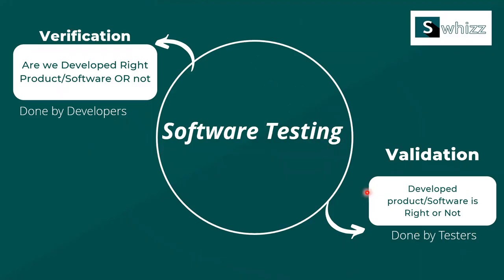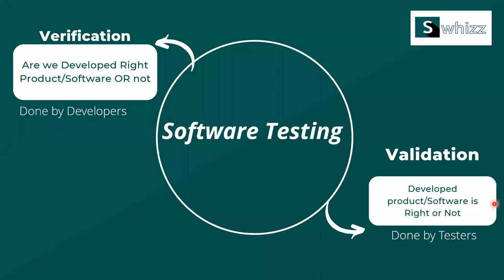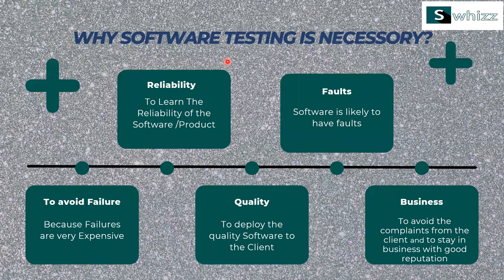Is that clear? Good. So why is software testing necessary? The verification process is done by developers, and then validation is required. In software testing, we need to concentrate on different parameters to find issues before production. Why software testing is necessary: to find out these parameters — reliability, avoiding failures, quality, and business.